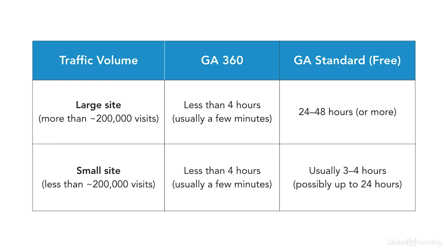Most of you are going to have a standard free version of Google Analytics, and in that case, if you have less than 200,000 sessions per day, you'll likely see those sessions processed within about three or four hours. Accounts beyond the 200,000 sessions — sometimes known as visits — per day will likely skip this intraday processing and only process in that one big batch overnight. In fact, some really large accounts on the free version may see delays up to 48 hours or more until all that data comes in.